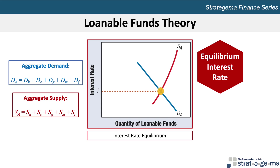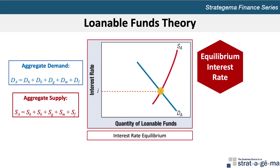By combining the aggregate demand and aggregate supply curves of loanable funds, we can compare the total amount of funds that would be demanded to the total amount that would be supplied at any particular interest rate. At the equilibrium interest rate of I, the supply of loanable funds is equal to the demand for loanable funds.